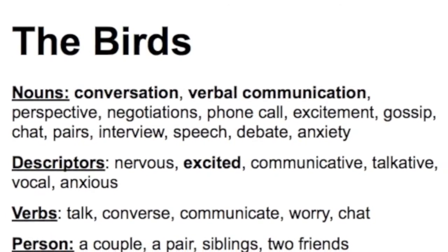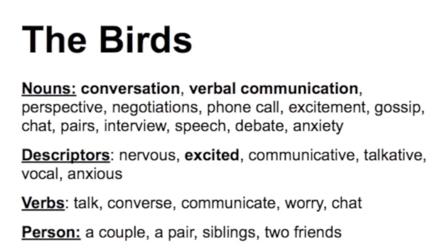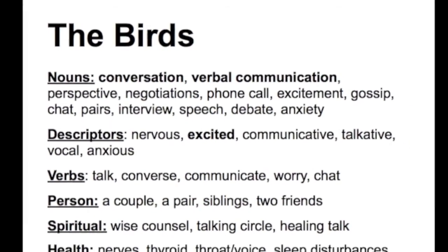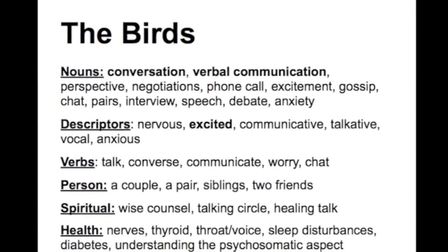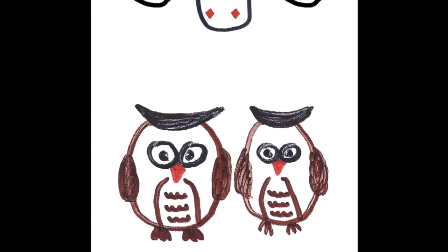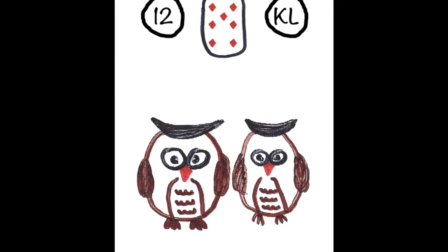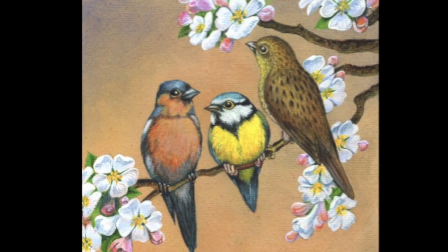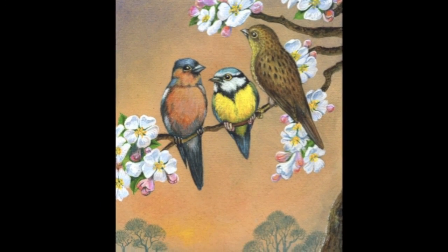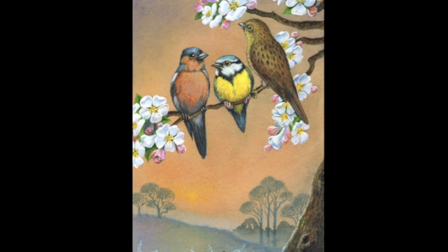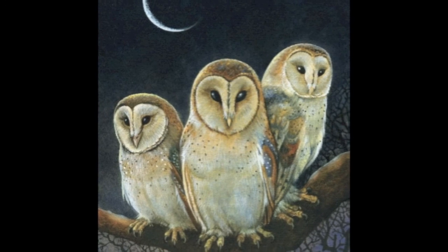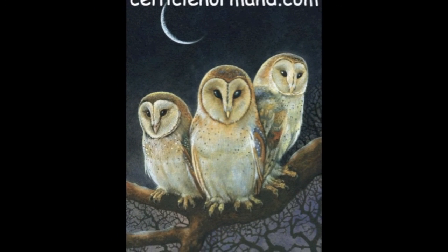The key words include conversation and verbal communication, but also perspective — if you're sat up on a branch you get a bird's eye view. It can be about negotiations and verbal negotiations. There is also the more negatively seen side of communication that is gossip and chat, but it is also about speech and debate. So it's another card that can be associated with interviews. It's someone who is communicative and talkative. More spiritually, we think of wise counsel or a talking circle, or talk that is healing in and of itself. For health, we have the nerves associated with anxiety, the thyroid, the throat or voice, sleep disturbances, and diabetes.